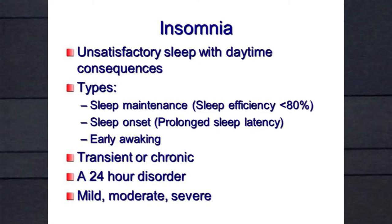We divide primary insomnia into types. Sleep maintenance insomnia is when your sleep efficiency is reduced — you can get to sleep but can't stay asleep. Sleep onset insomnia is a prolonged latency to sleep, but once you get to sleep you're okay. And some people, God bless them, have both types — they can't get to sleep and they can't stay asleep.